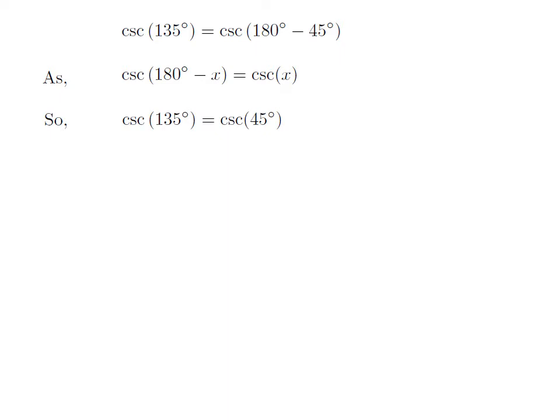Let us apply the above identity for cosecant of 135 degree. Here, x is 45 degree, so cosecant of 135 degree is equal to cosecant of 45 degree.